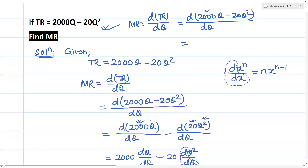This gives us 2000, and then minus 40Q, which is the simplified marginal revenue result.